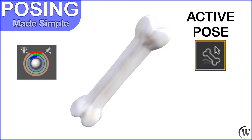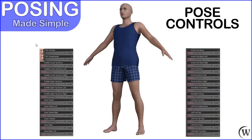We're going to cover bones and how they relate to rigging and how to use the active pose tool. We're also going to show you how some characters and props might have built-in pose controls to control things like shoulder shrugging, or different things for the whole body without having to individually move individual parts.